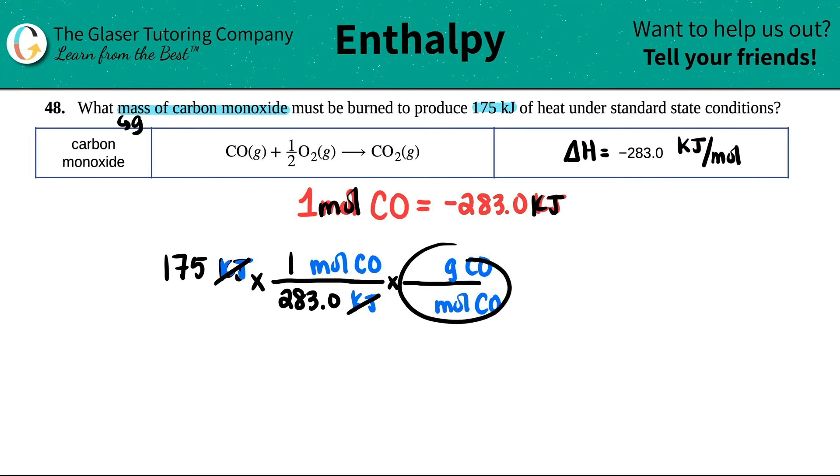And remember, whenever we use the periodic table, it's always one mole. So let's go to the periodic table. What's the molar mass of carbon and oxygen? 12.01 plus 16. 28.01. Cancel out the moles of carbon monoxide. And there you go.